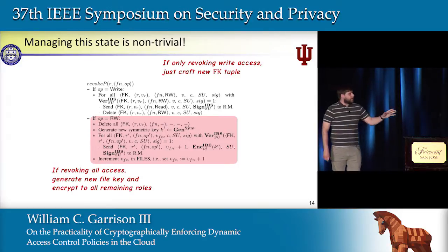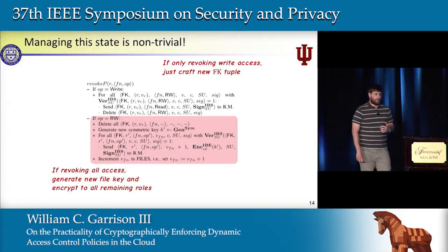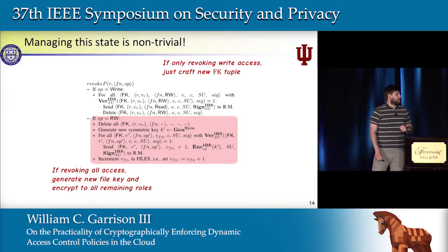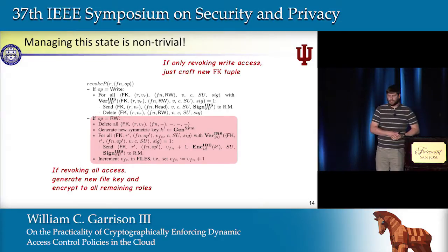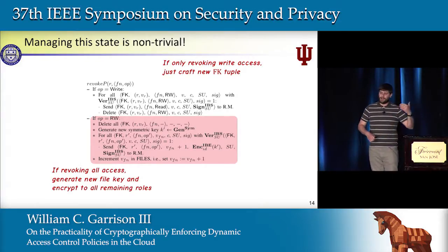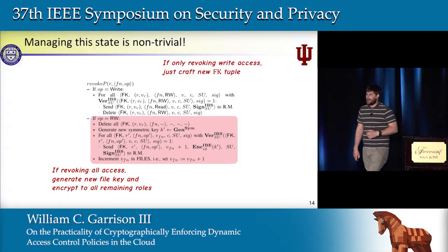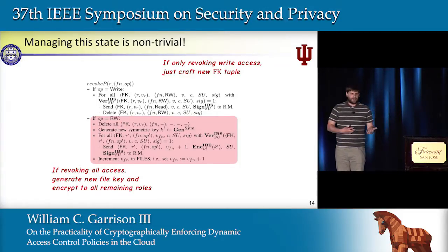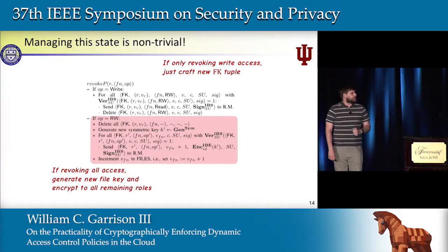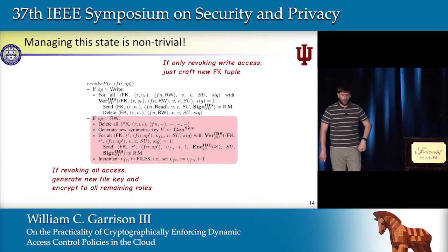And when we're revoking a user—not just revoking one permission from one role, but removing a user from a role entirely—we'll actually have to do this for every file that the role could access. That way, the user could be caching not only role keys, but also all the file keys for the role while they were a member.